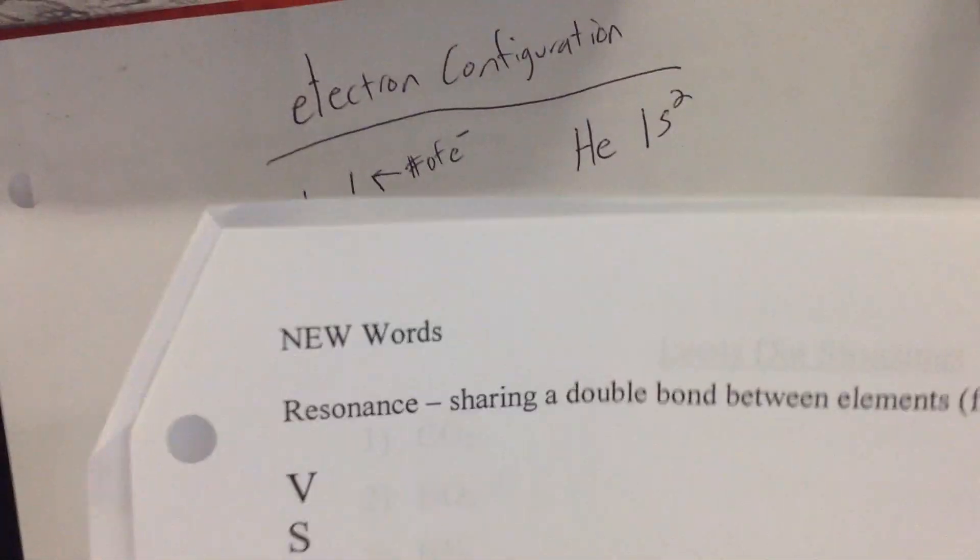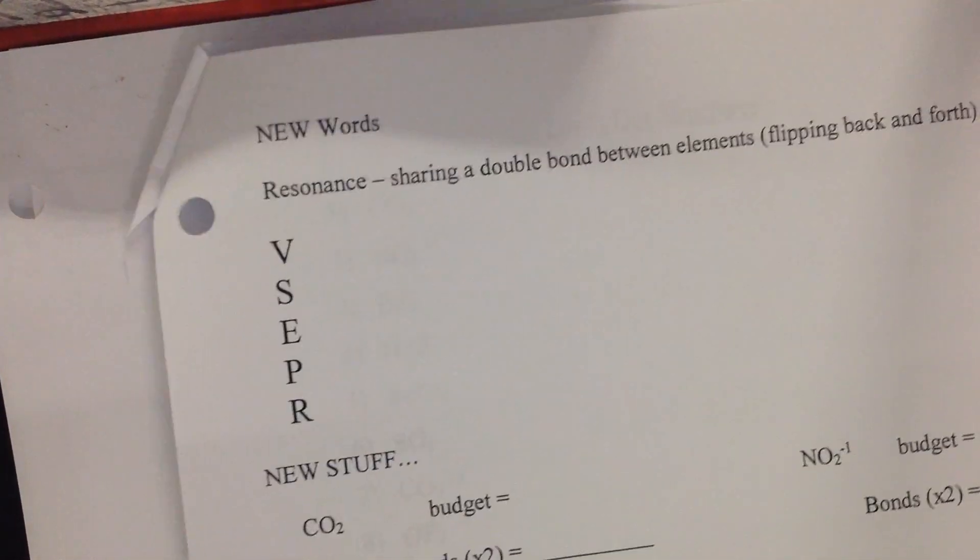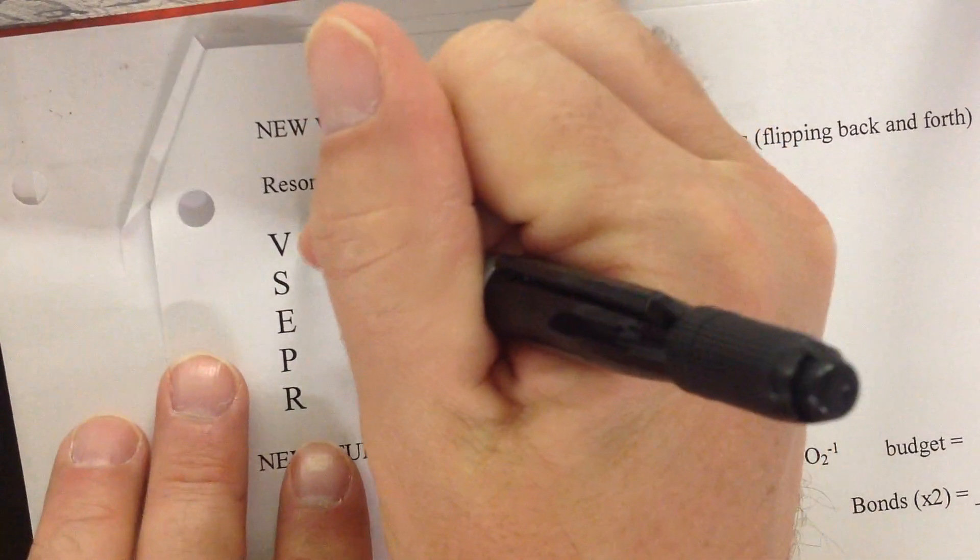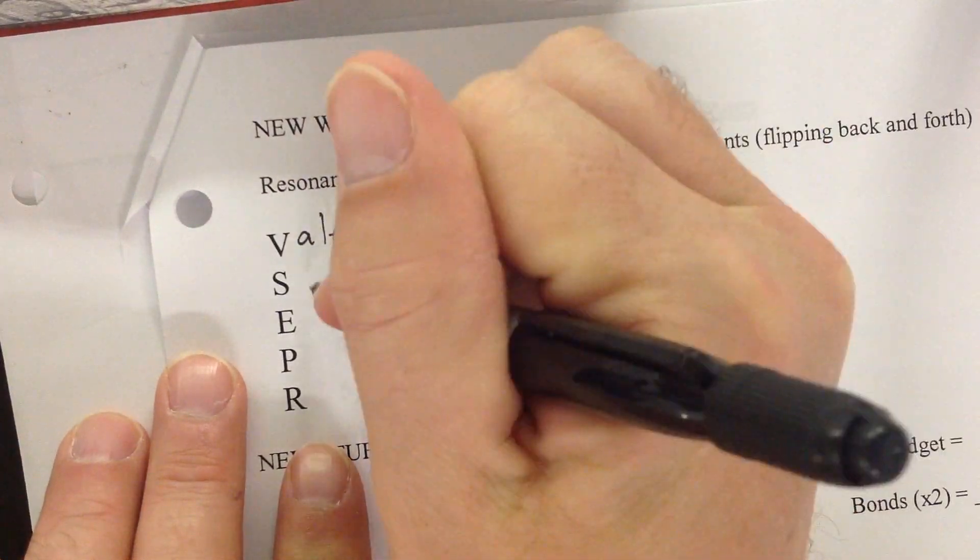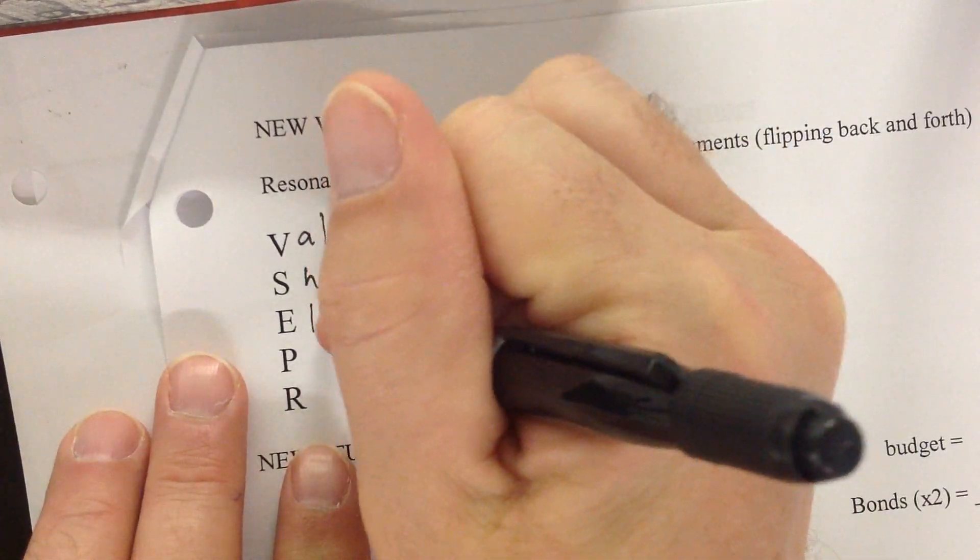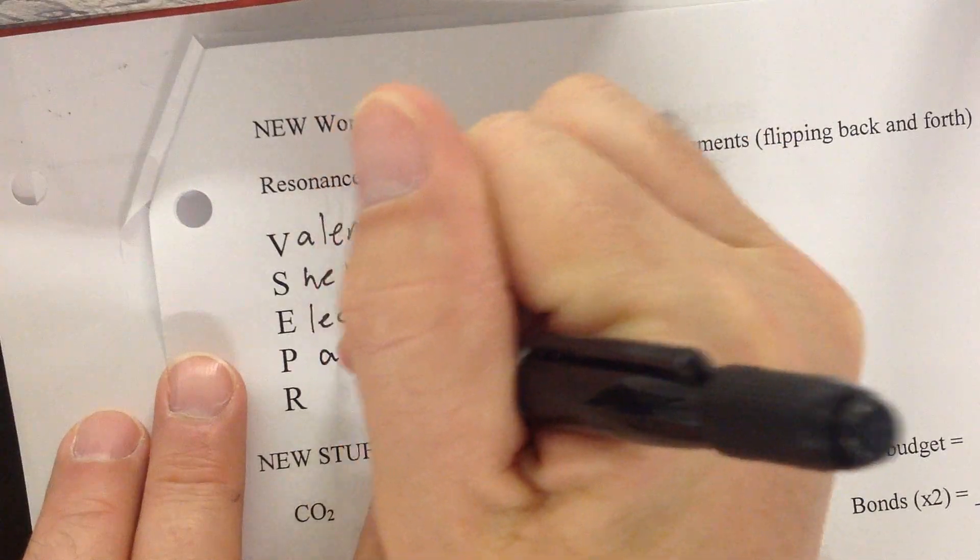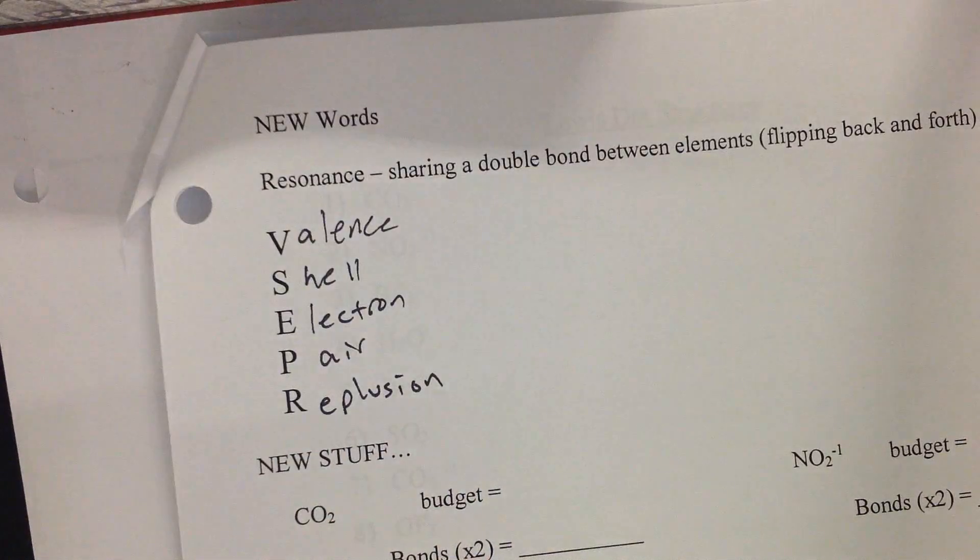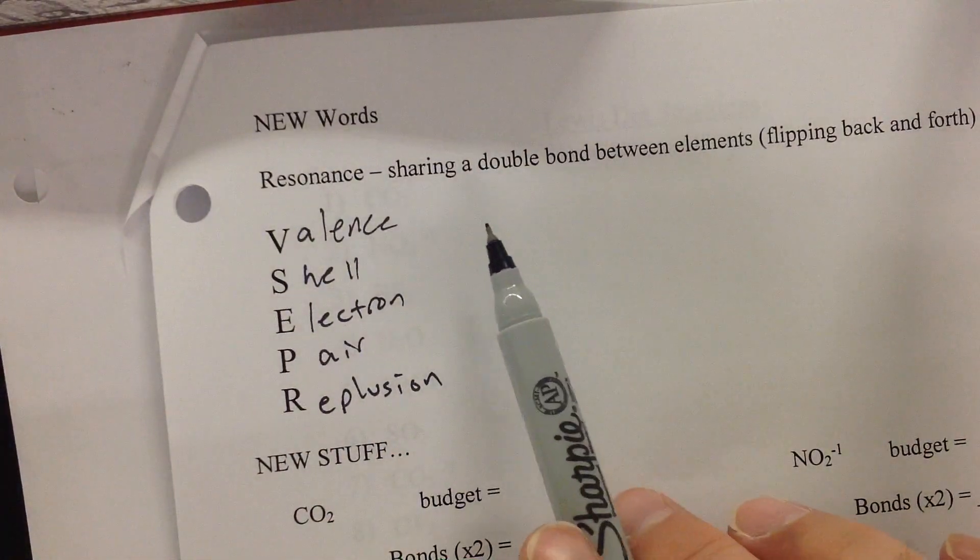Now one thing I'm not sure if you remember from yesterday. Did you write down what VSEPR stood for? If not, now's a good time. So let's go ahead and write out valence shell electron pair repulsion. Resonance, we'll be looking at here in a minute. That's a sharing of a double bond.